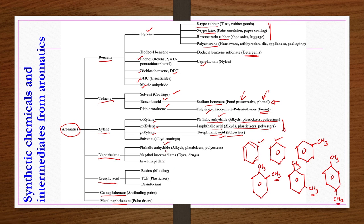Naphthalene is used for phthalic anhydride, naphthol intermediates, and insect repellent manufacturing. Chrysalic acid is used for resins, plasticizers, and disinfectant manufacturing. Many applications are there; only a few of the most important ones have been shown.